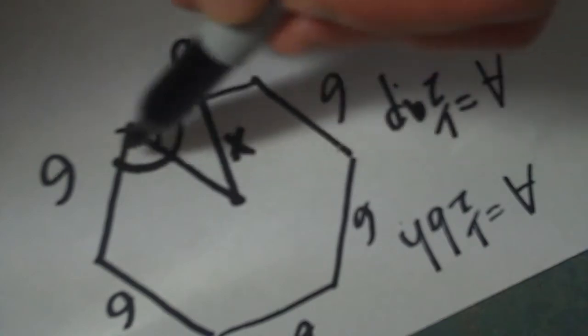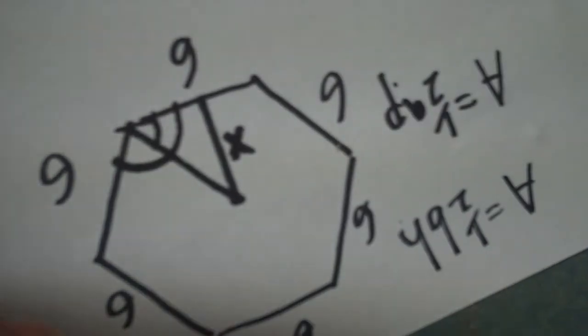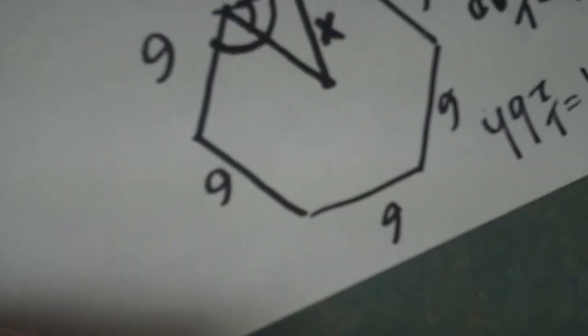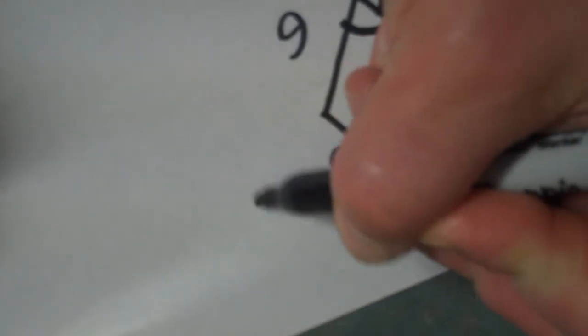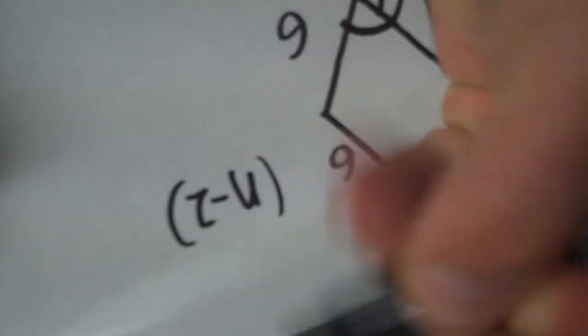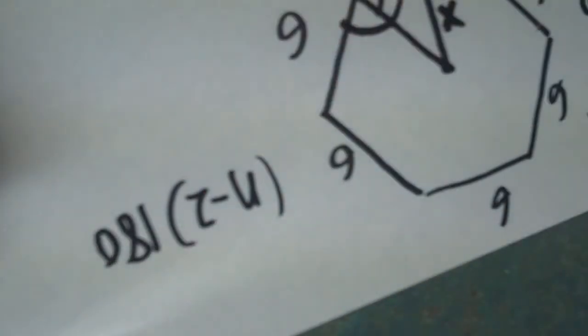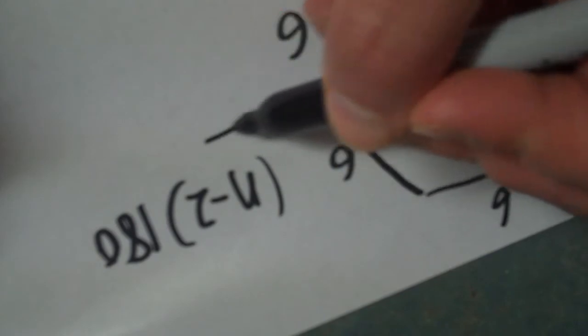Now, what we're going to do to figure out what this angle is, is just determine the sum of all the angles inside that hexagon. So you can either use the formula n minus two times 180, or you can look at how we come about that formula in the first place.